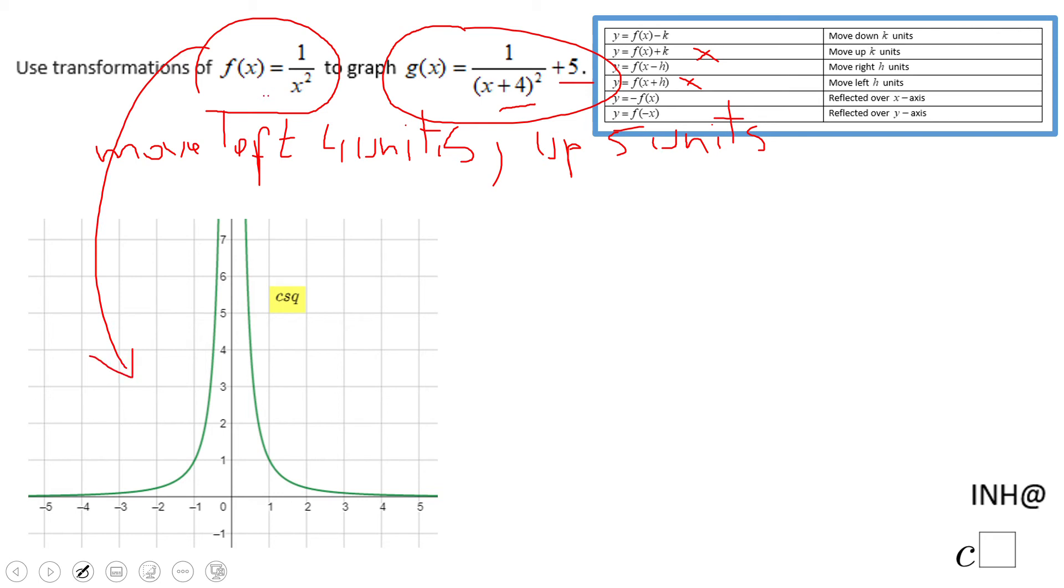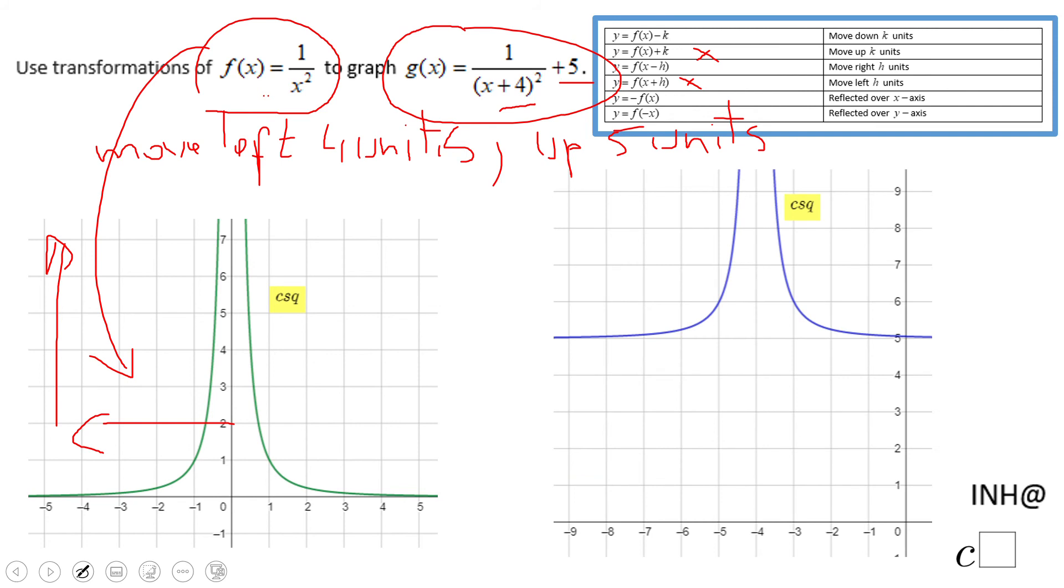This is f(x). g(x) is going to be the same like this just left four units and up five units. So the same graph left and up which you see it here.